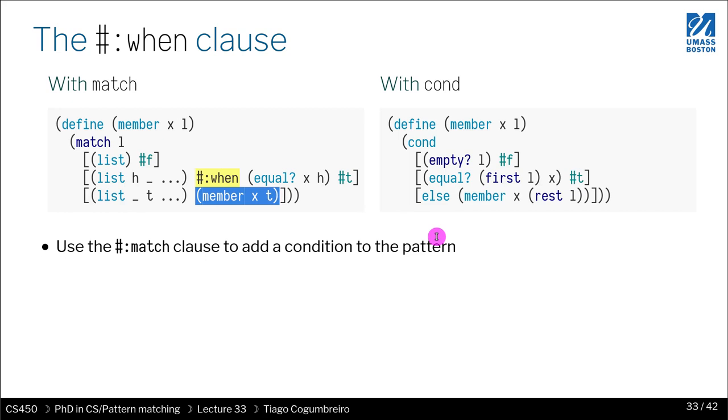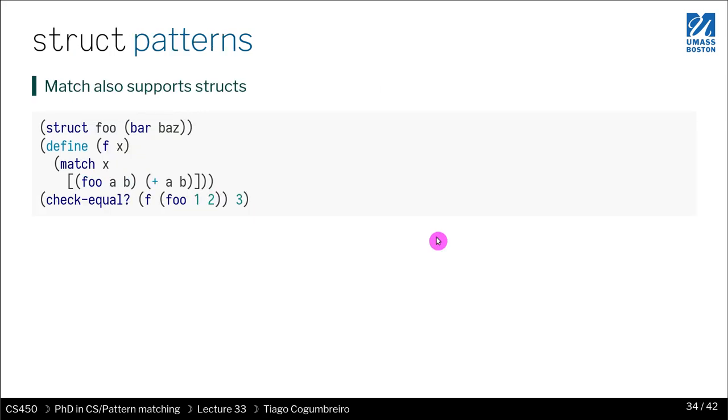Another thing that racket's pattern matching allows you to do is actually match on the structures, on structs. So you can say if x is a struct, let's say foo, I want a and b to be those two fields. And you can also use underscore as usual. So in this case, I want to take a and b and I want to add the two fields together, you could do that very easily with this match clause.